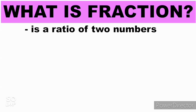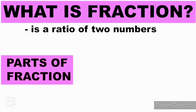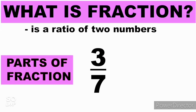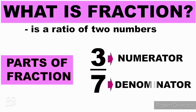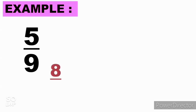A fraction is a ratio of two numbers. Let's have an example: 3 over 7. So the parts of a fraction — we have what we call the numerator and the denominator. 3 is the numerator, and 7 is the denominator.